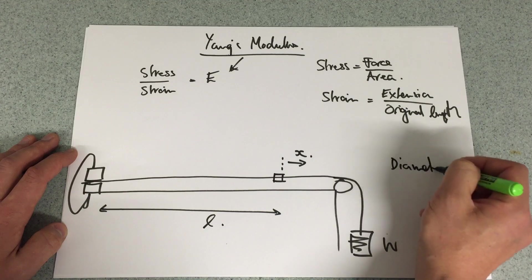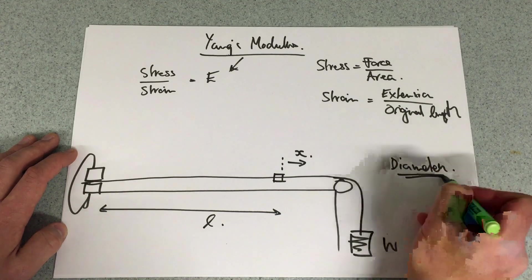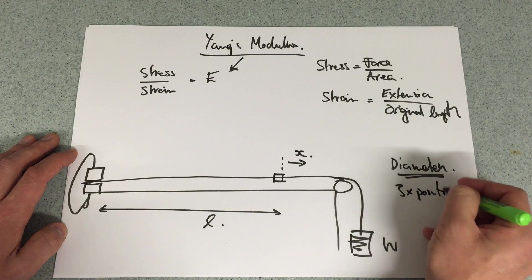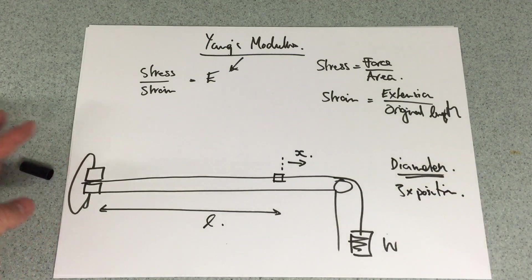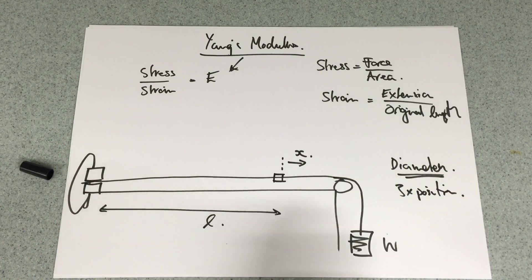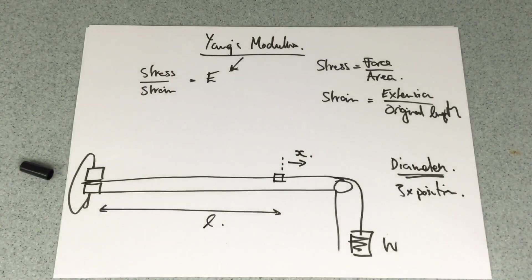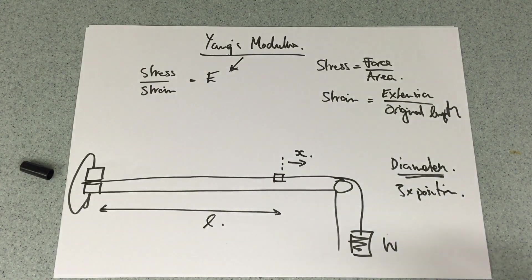I need to work out the diameter of my material. And how do I do that? I want to do it in three positions in order to work that out because you might have a difference in the thickness of the wire. I'm going to show you the wire that I'm going to be using.